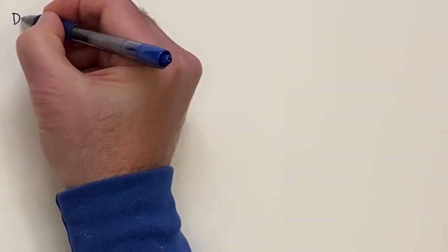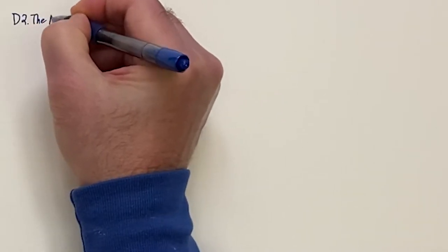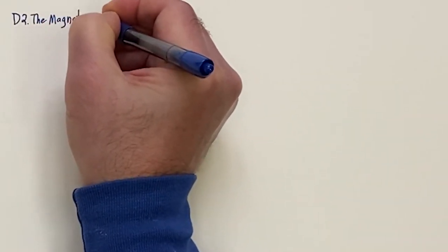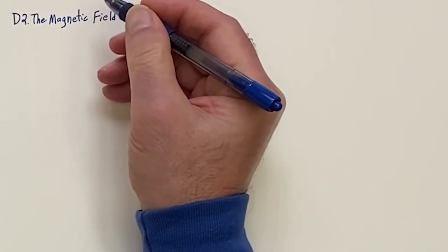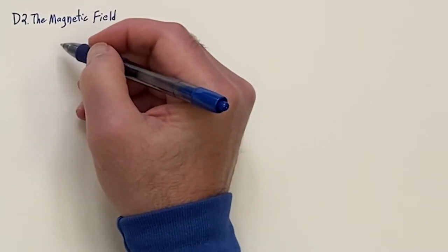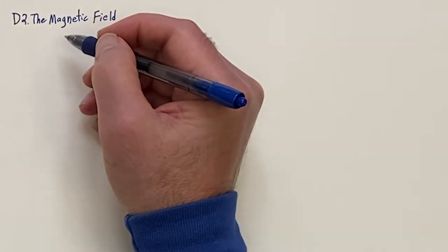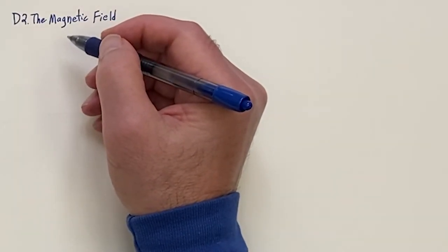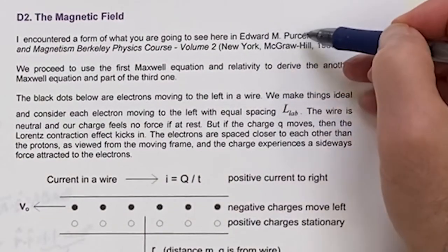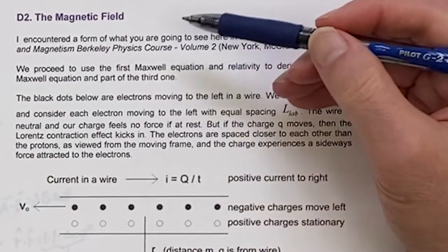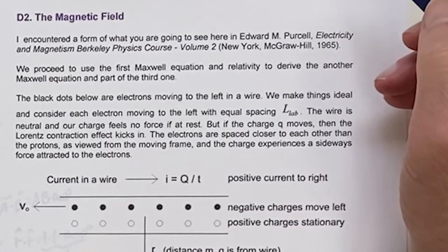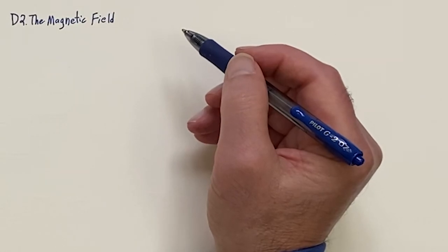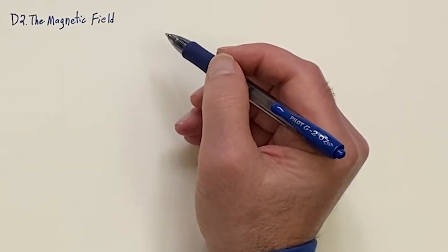Now we come to D2: The Magnetic Field and the magnetic force. I came across this treatment in a book for undergraduate physics majors: Purcell, Edward Purcell, Electricity and Magnetism in Berkeley Physics Course, volume two, 1965. This is amazing — they show you that you can get the magnetic field from special relativity.